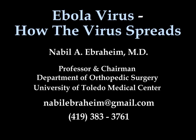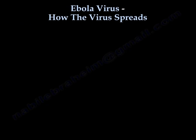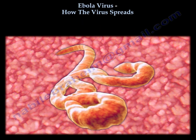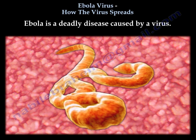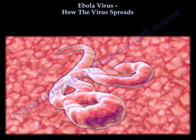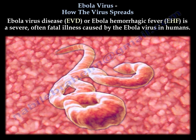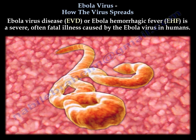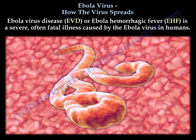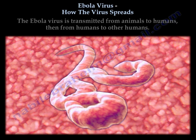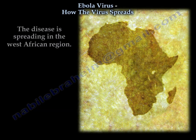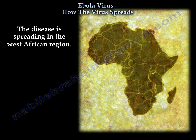Ebola virus: how the virus spreads. Ebola is a deadly disease caused by a virus. Ebola virus disease, or Ebola hemorrhagic fever, is a severe, often fatal illness caused by the Ebola virus in humans. The Ebola virus is transmitted from animals to humans, then from humans to other humans. The disease is spreading in the west African region.